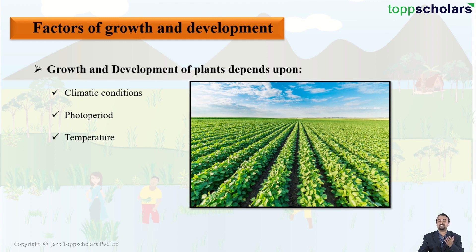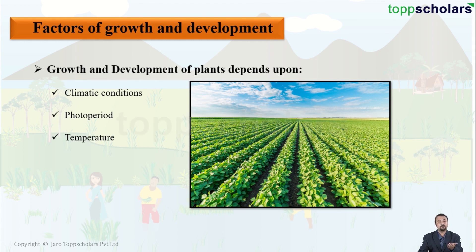The next factor is temperature. Some plants prefer colder temperatures whereas some plants prefer warmer or hotter temperatures. So these three factors affecting the growth and development of plants are climatic conditions, photo period, and temperature.